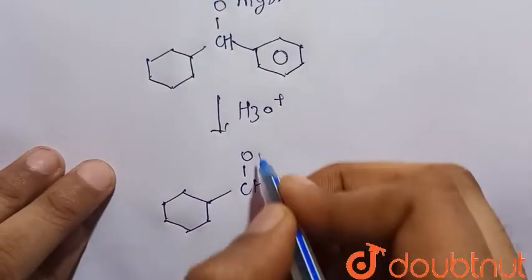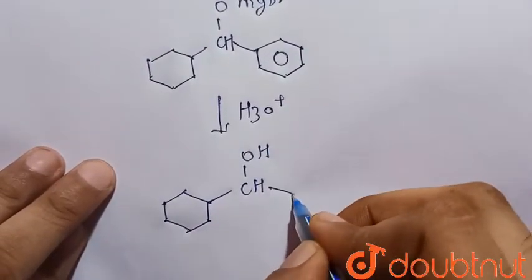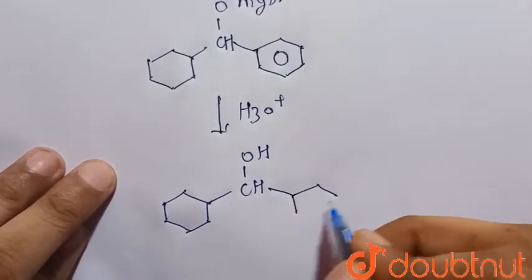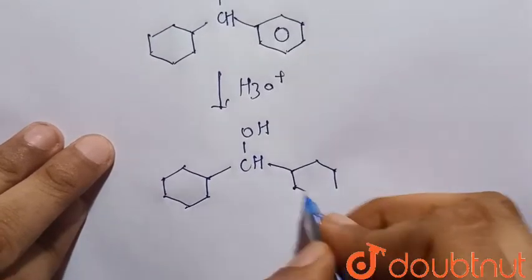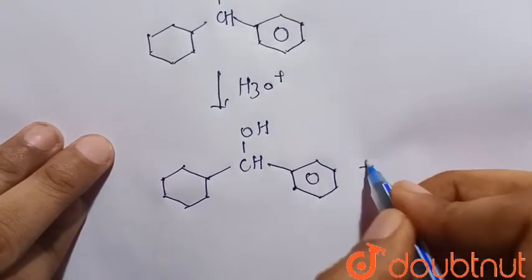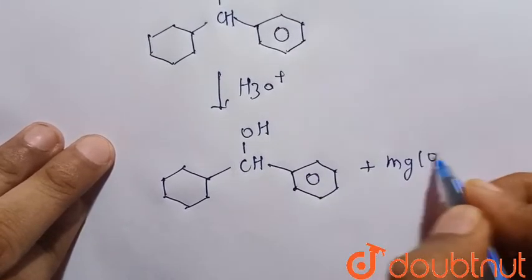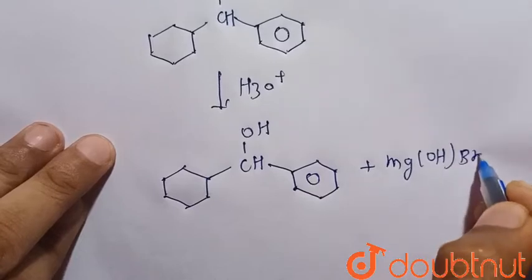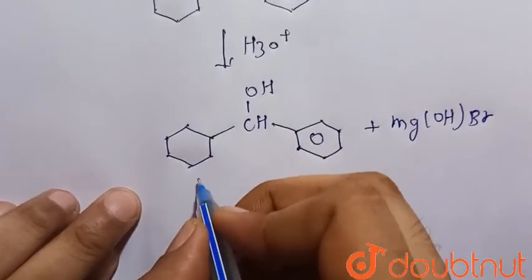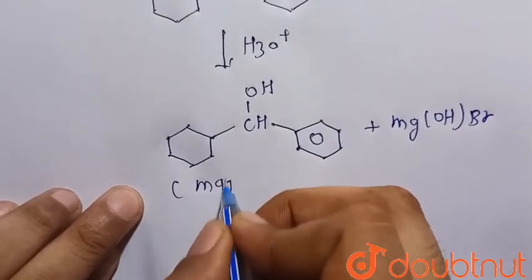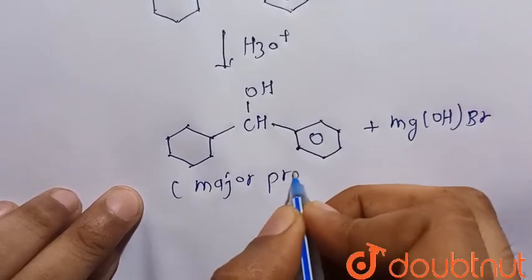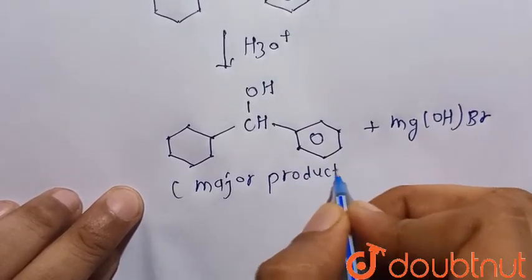H, so CHOH, and this is the phenyl. And side product Mg(OH)Br is also formed, but this is our major product. So this is our major product.